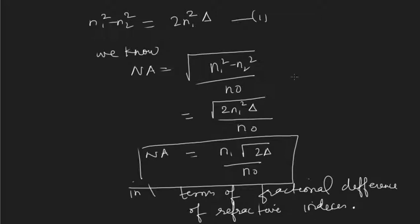Now we will try to see what are the different kinds of fibers based on different properties — for example, based on the refractive index profile, based on the modes, or based on the materials. We will see that in the next lecture.